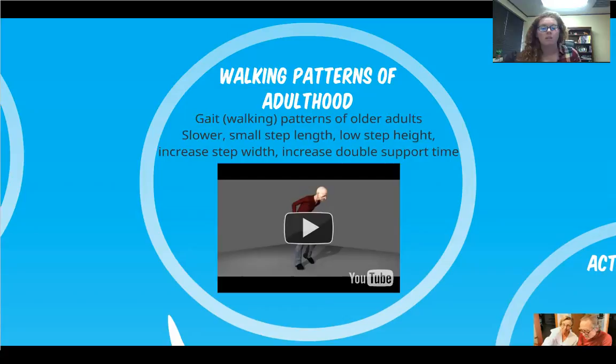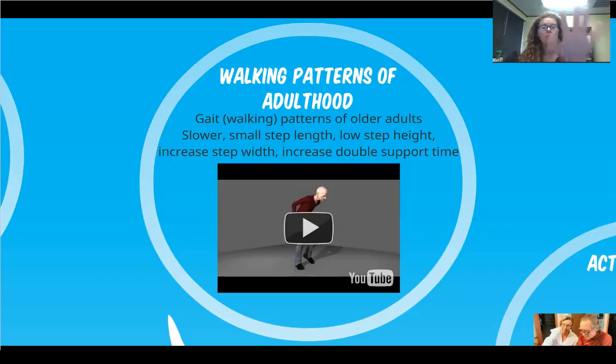Low step height puts them at risk if they're having to step over an object, since they're not lifting their foot up and are more likely to trip. Increased step width means they may not be taking large steps forward but are increasing the width of their steps. And increasing double support time — double support time means when both feet are on the ground. When you walk, you step and pick up a foot, and there's a delay before the next foot goes up after one foot gets down. That's where the slowness happens, and that's their method of increasing their support system.